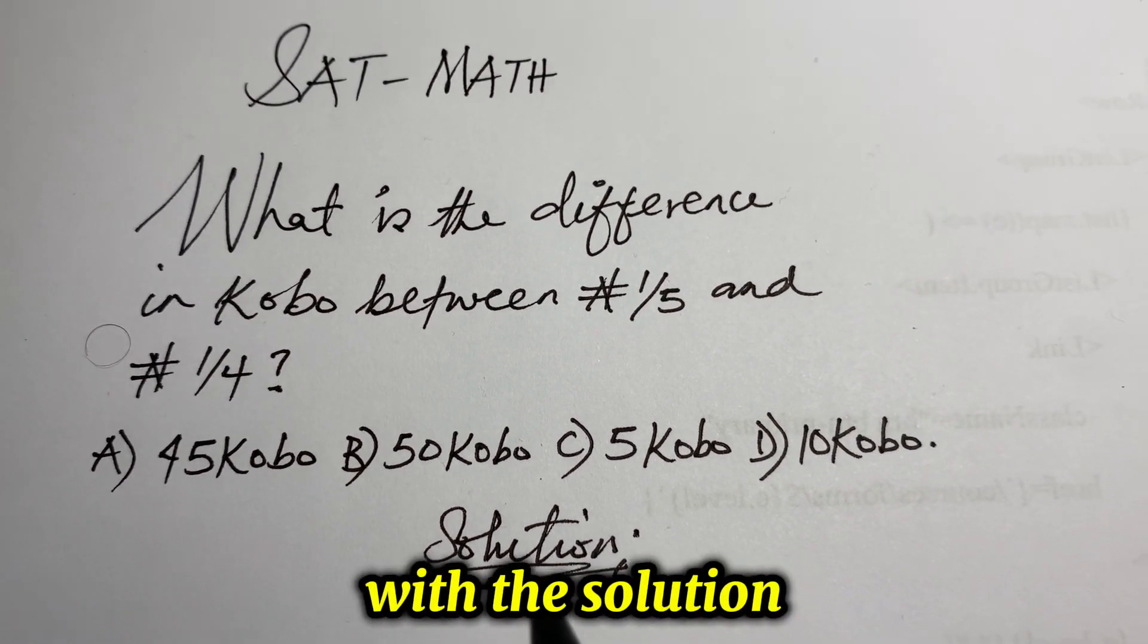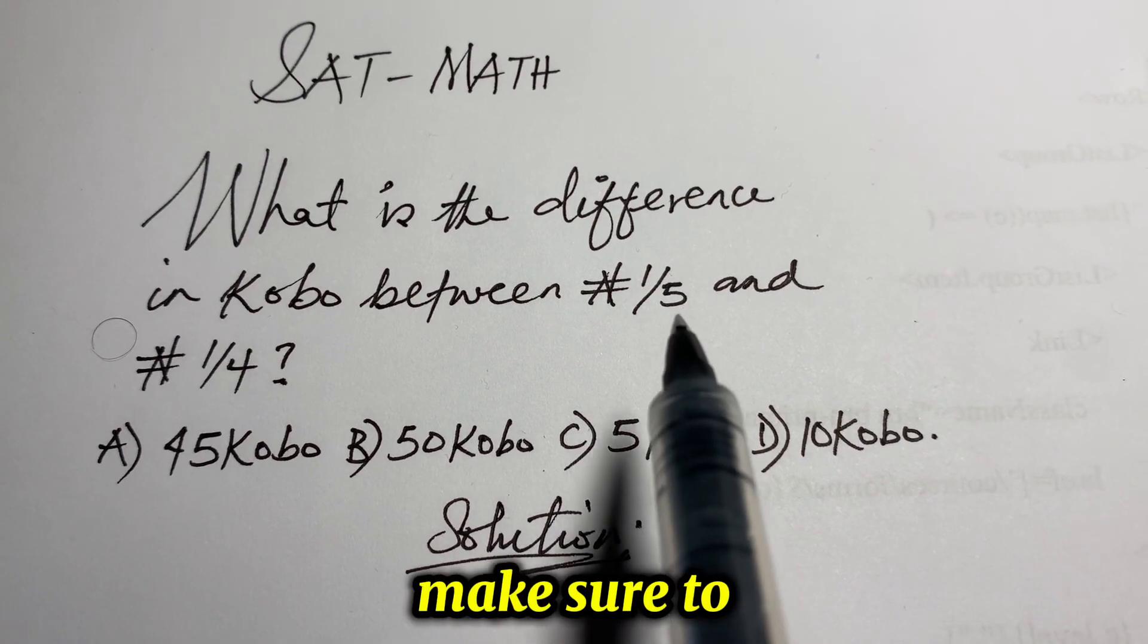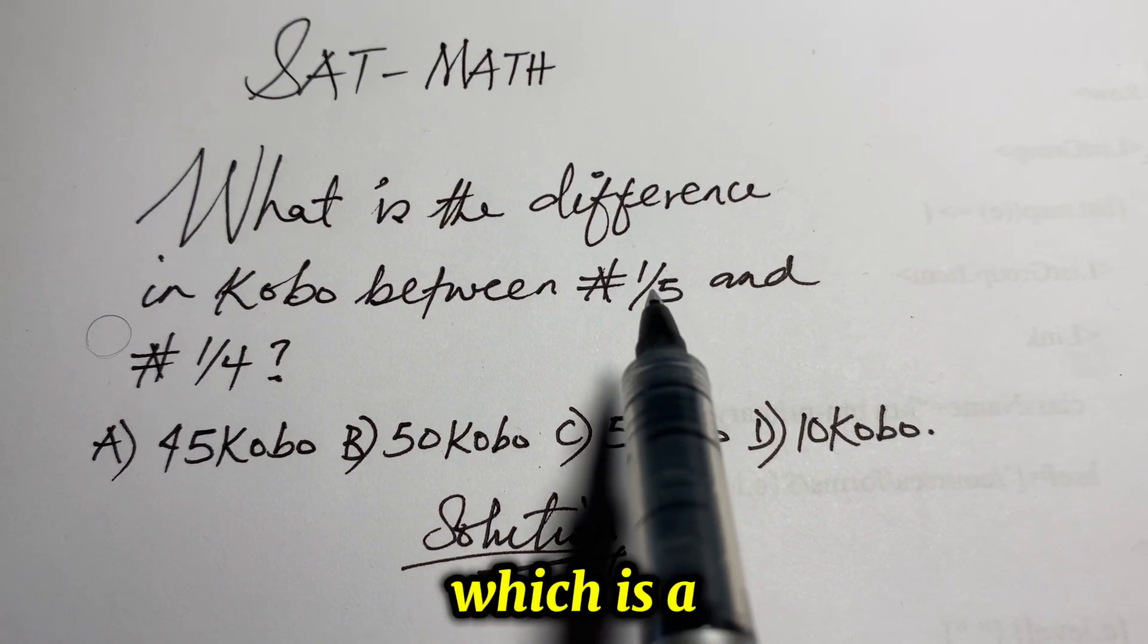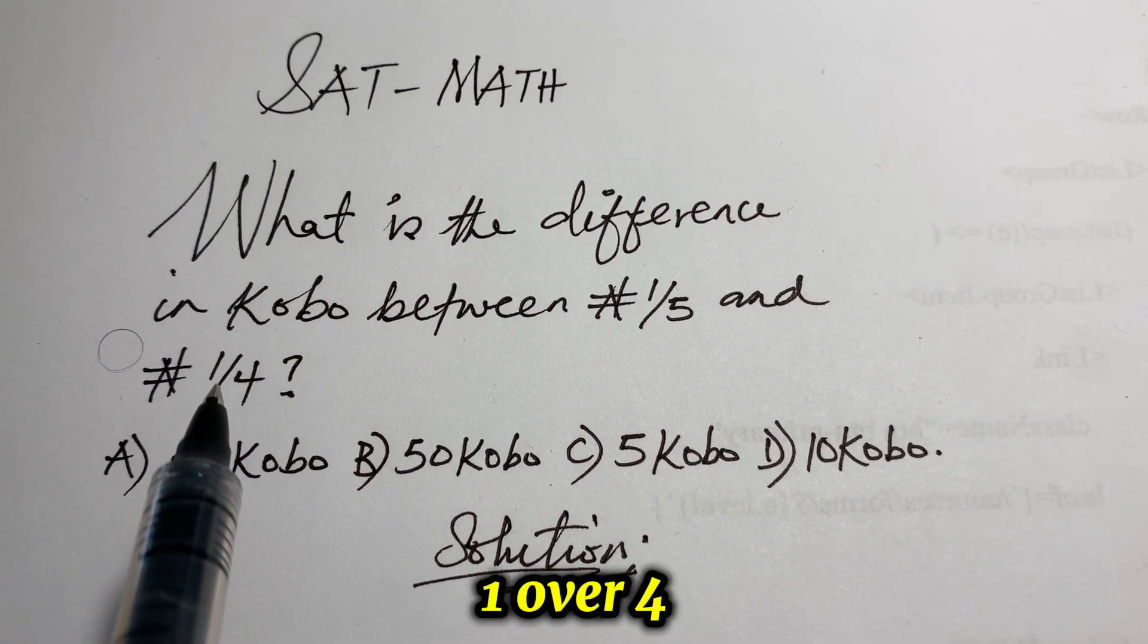So, to begin with the solution, the first thing I would like for us to do is to make sure to convert 1 over 5, which is a proper fraction, to decimal fraction. The same thing we need to do for this 1 over 4.